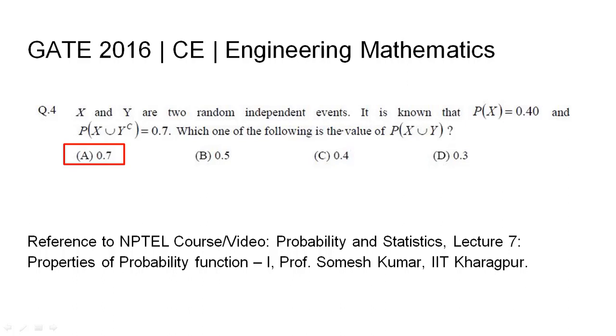So the value of P(X∪Y) is 0.7, which corresponds to option A.